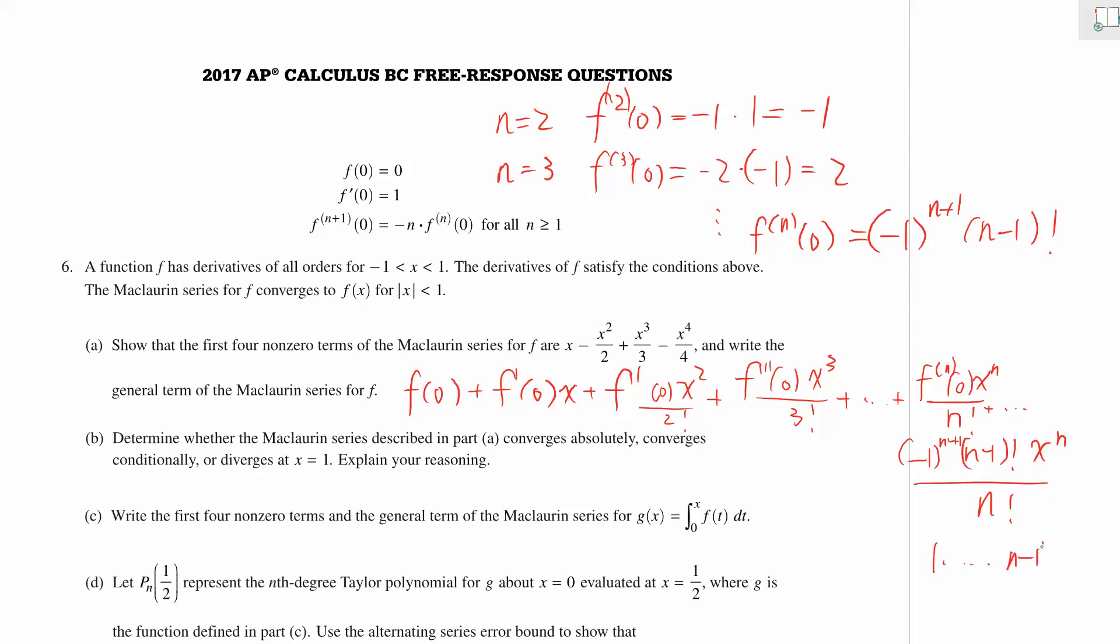But this whole thing is (n-1)!, so we can rewrite n! as (n-1)! times n, then we can cancel these two off. Just so you know, we do get the first four terms as given, and the general term is (-1)^(n+1) times x^n over n.